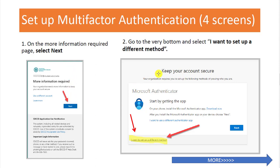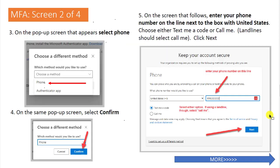On the next screen, scroll below the big box and select 'I want to set up a different method.' A window will open — on that window, select Phone. On that same screen, it will change to Confirm — select Confirm.